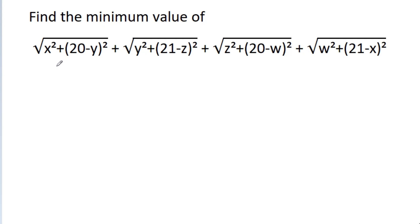In this video, we have to find the minimum value of: square root of (x² + (20 - y)²) + square root of (y² + (21 - g)²) + square root of (g² + (20 - w)²) + square root of (w² + (21 - x)²).